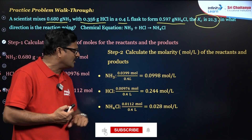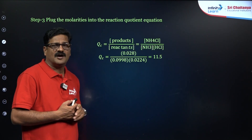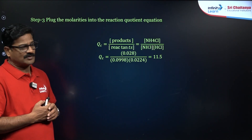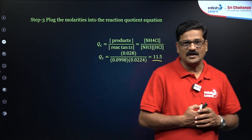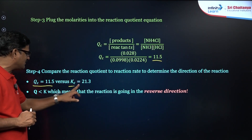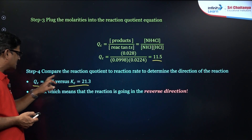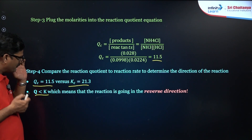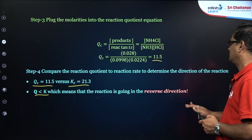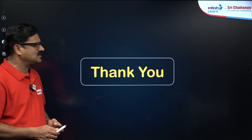Plug the active mass values into the QC expression: QC = [NH₄Cl] ÷ ([NH₃] × [HCl]). Substituting: 0.028 divided by (0.0998 × 0.0224), solving gives QC = 11.5. Now compare: QC = 11.5 and KC = 21.3. Since KC is greater than QC, the reaction proceeds in the forward direction.